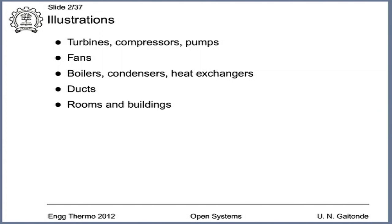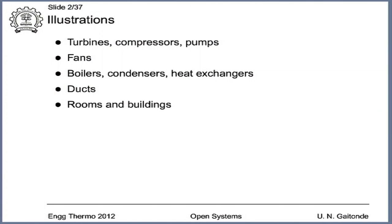Nowadays, we are interested in environmental control — physical, psychological, thermal. So we consider our rooms and buildings also as thermodynamic open systems and analyze them. Engineering devices like cars are very complex open systems, and finally, a human being is perhaps the most complex open system which we may consider in this course. There is no end to this list.